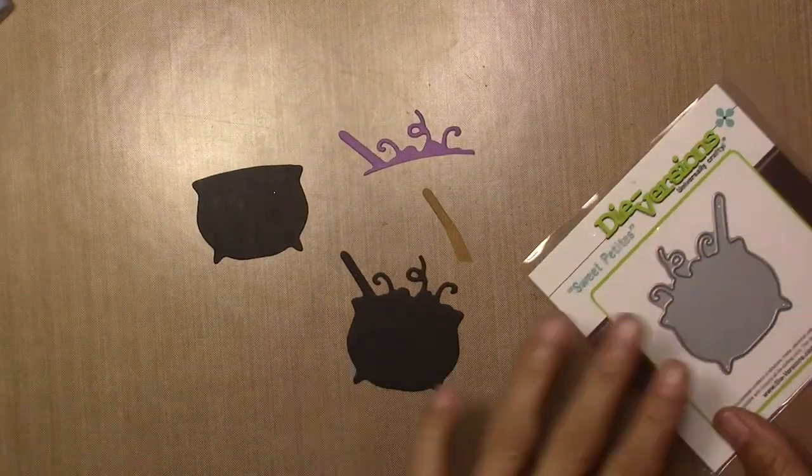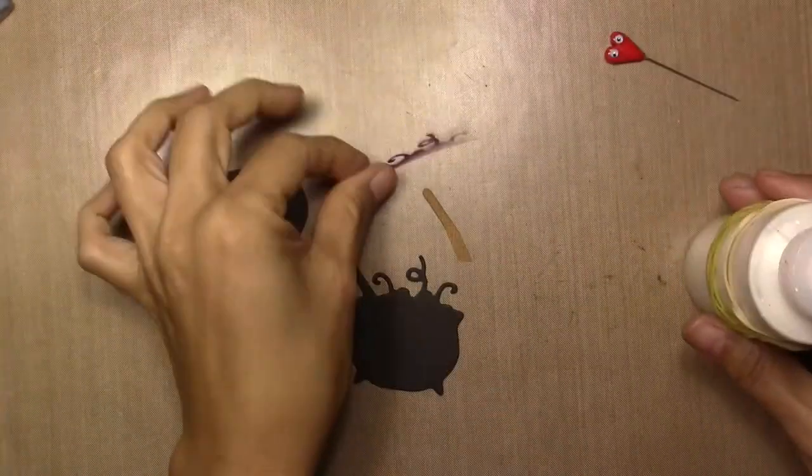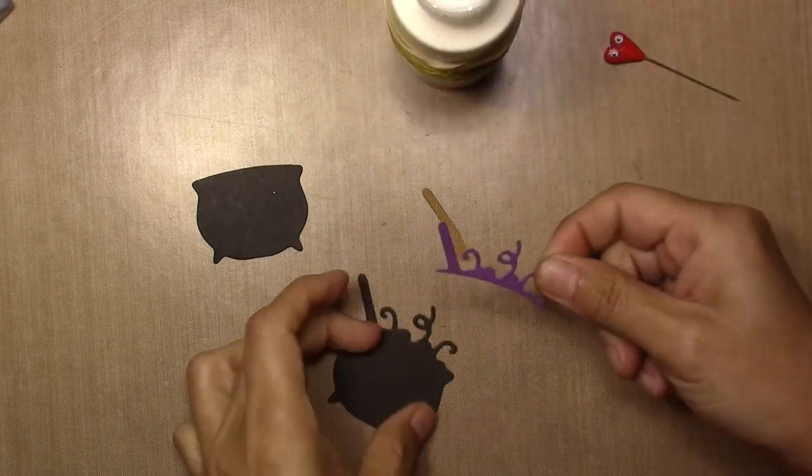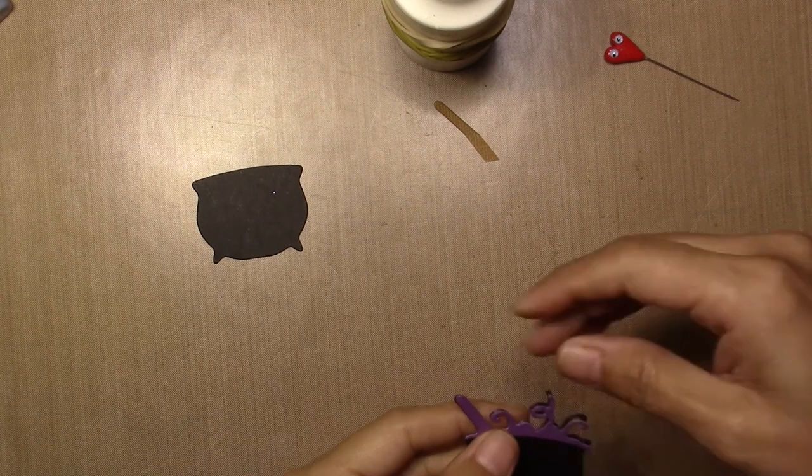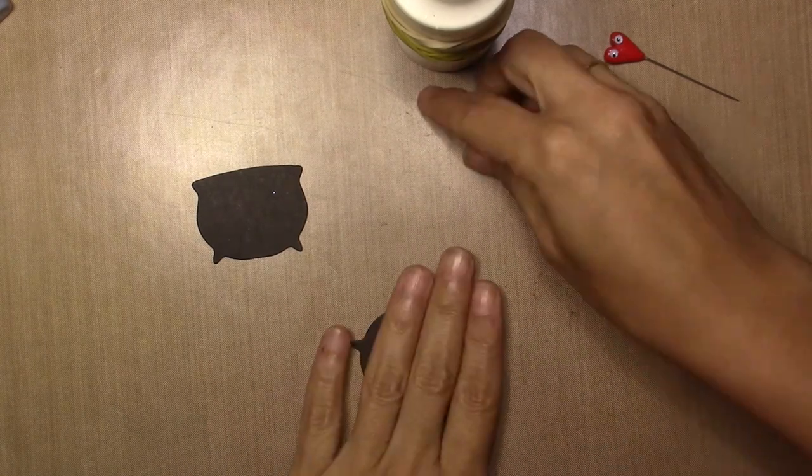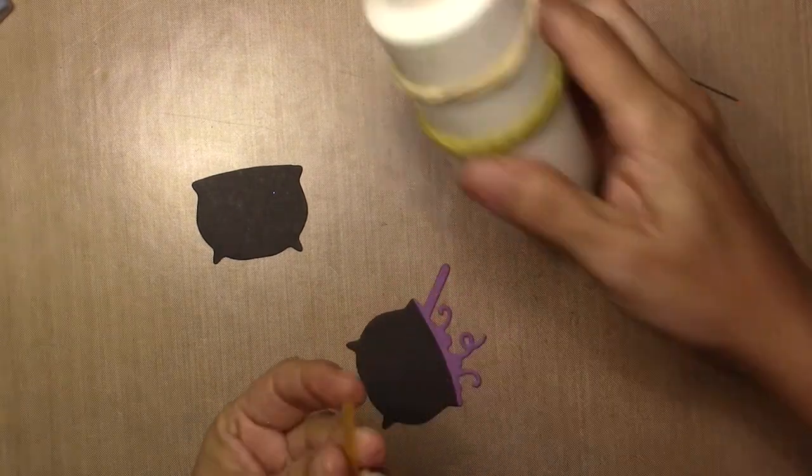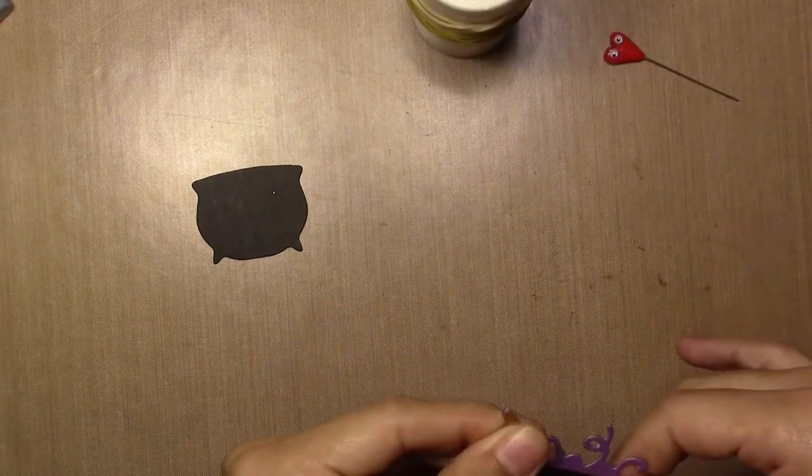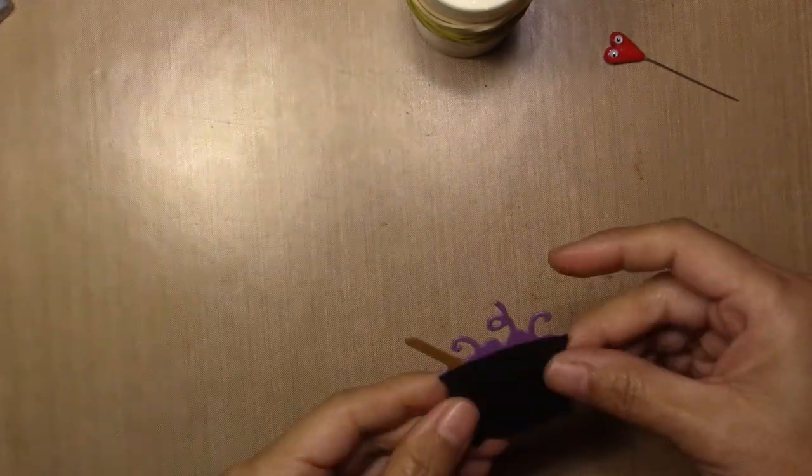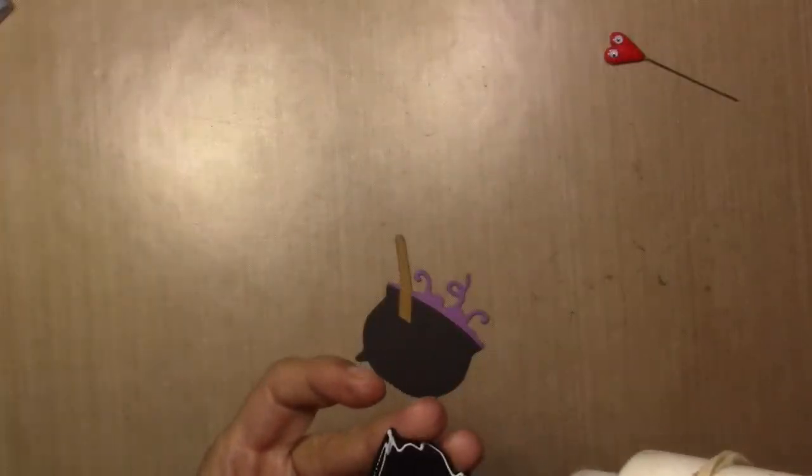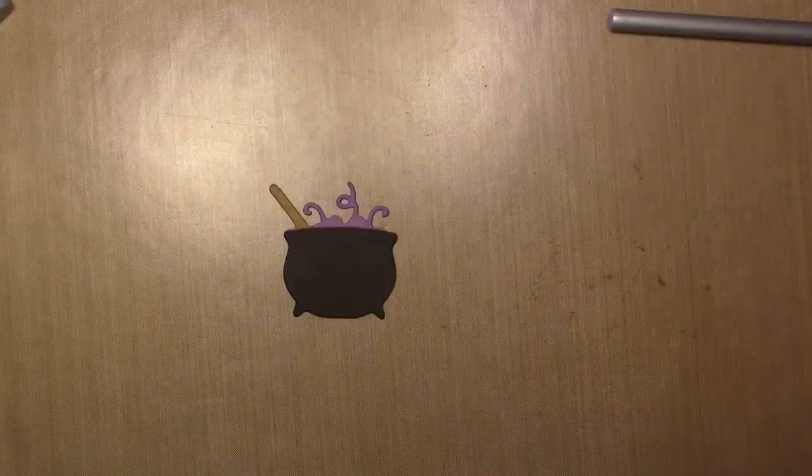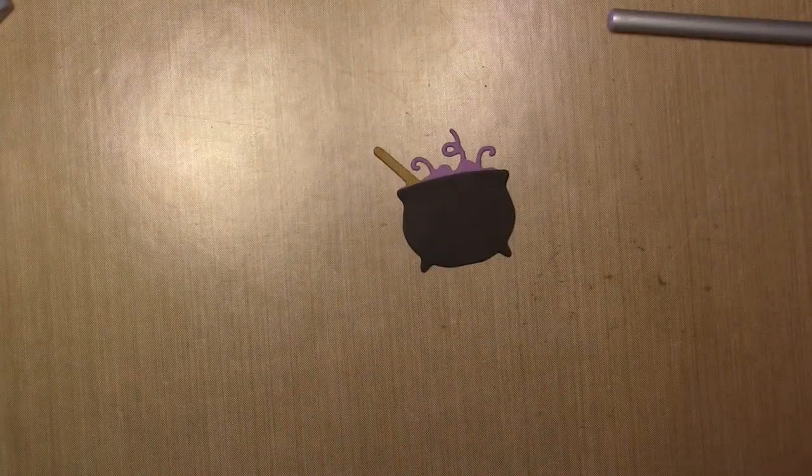Here I'm using this cauldron die cut and I cut it four times. One in purple, two in black and one in brown. In the purple I just cut the top part and in the brown I just cut the spoon. And then I cut the top part in one of the black ones, and put it at the top of the cauldron. And you see here how it looks after I finish.